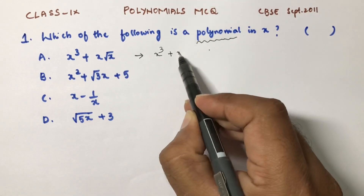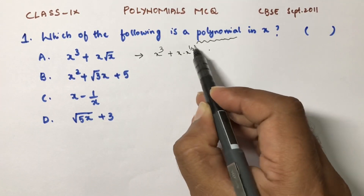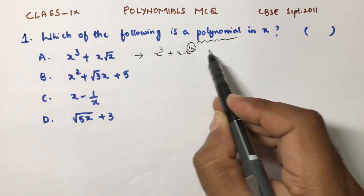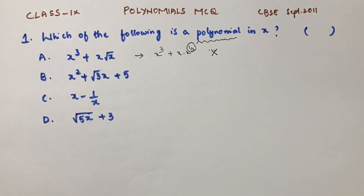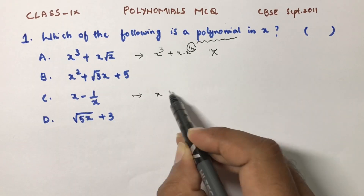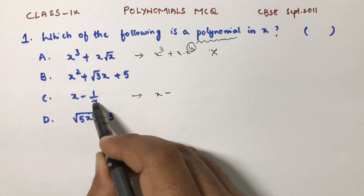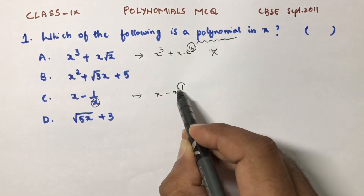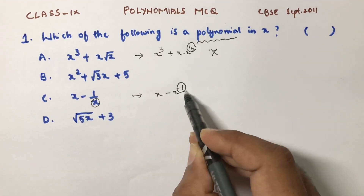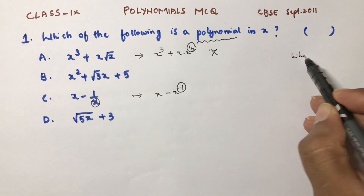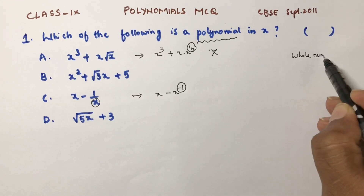x plus x·x^(1/2) — since root x is x^(1/2), the power is not a whole number, therefore it is not a polynomial. Similarly, x minus (1/x) gives x^(-1) when brought to the numerator; the power is negative, not a whole number, so this is also not a polynomial.